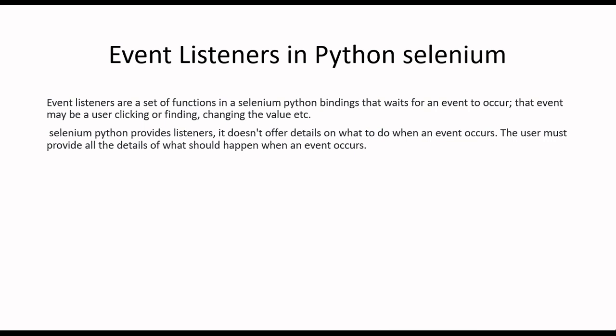Selenium Python provides listeners, but it does not offer details on what to do when an event occurs. For example, if we are going to click, there is an event listener which will execute before as well as after the click, but it will not define what needs to be done. The user must provide all the details — what should happen before performing the click and after performing the click. Similarly, for a navigate URL event, before and after navigation, the user will decide what to perform.